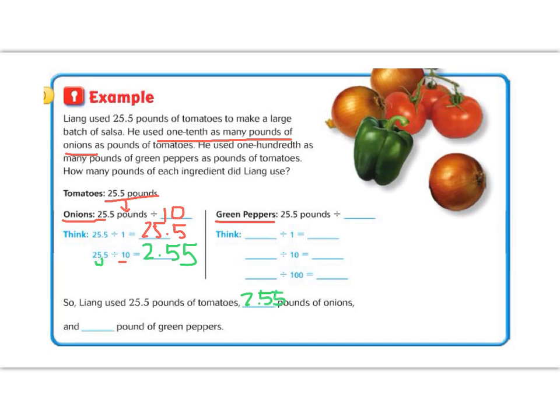And now we need to figure out the green peppers. The green pepper says he used one-one-hundredth as many pounds of the green peppers. So that means we're going to divide by 100. So let's use our patterns to figure that out. We're going to divide 25.5 starting off by 1. Okay, nothing changes. 25.5.